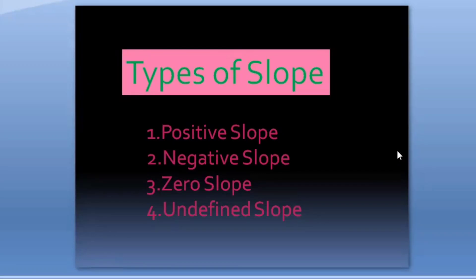Hi, welcome to IGCSE Math. In this video, I'm going to tell you about the types of slopes. We have four types of slopes: positive, negative, zero slopes, and undefined slopes.